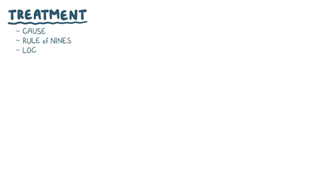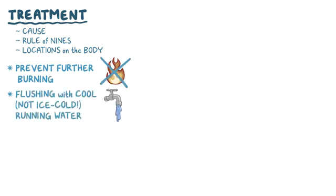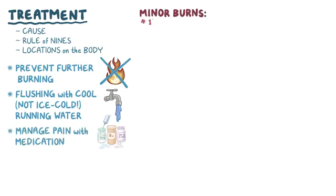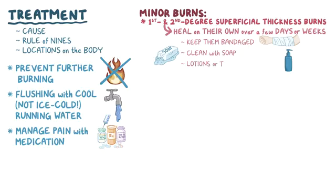The treatment for a burn is determined by what caused the burn, the rule of nines, and the location of the burns in the body. In general, immediate treatment typically includes preventing further burning, like flushing the burn with cool but not ice cold running water. After that, it's important to manage pain with medication. Minor burns, like first and second degree superficial thickness burns, can heal on their own over a few days or weeks by keeping them bandaged and clean with soap and water. Sometimes lotions to prevent drying or topical antibiotics can be used. If blisters form, it's best to leave them alone, because the intact skin helps to prevent infections.